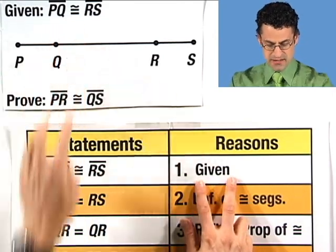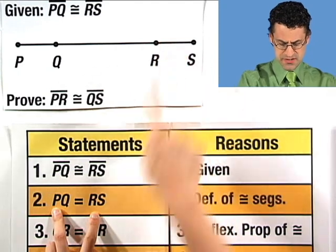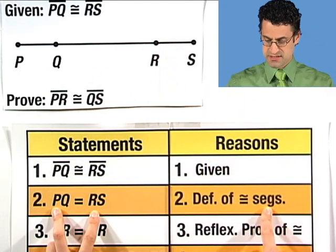So first of all, we're given this fact. That's good. Therefore, the length of PQ, that length is going to equal the length of RS. That's just the definition of what it means to be a congruent segment. So that's good.